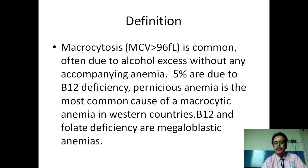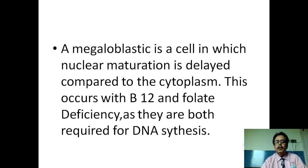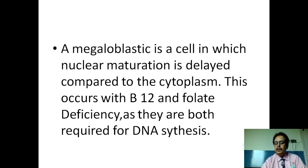B12 and folate deficiency are the classical megaloblastic anemias. The megaloblast is a cell in which, during RBC development, nucleus maturation is delayed compared to the cytoplasm, resulting in disproportionate maturation leading to a larger cytoplasm and smaller nucleus. This occurs because vitamin B12 and folate are both needed for thymidine and DNA synthesis for the nucleus.